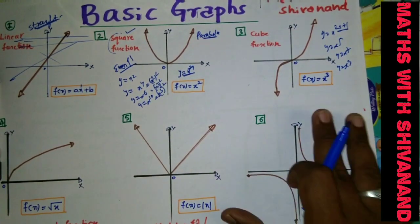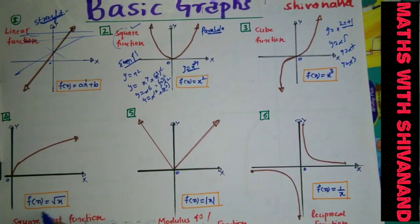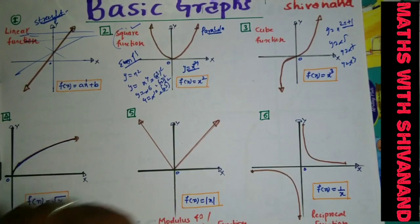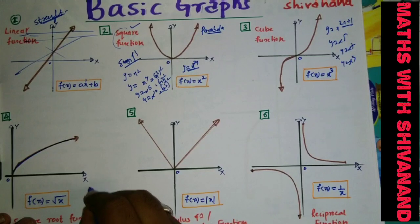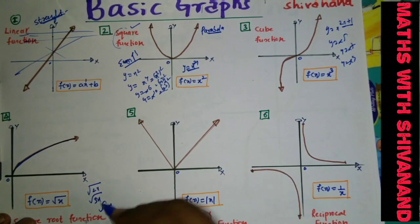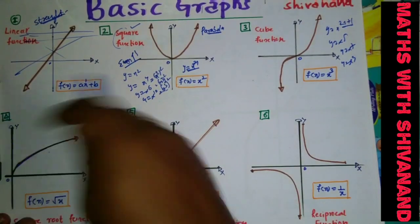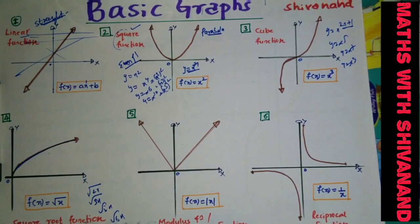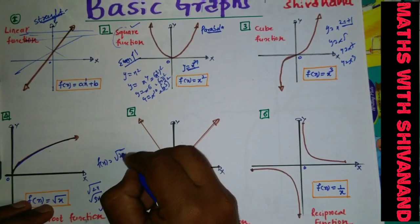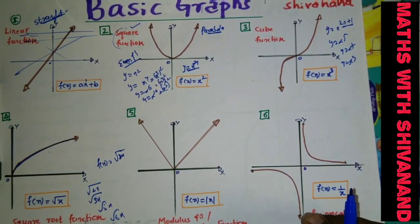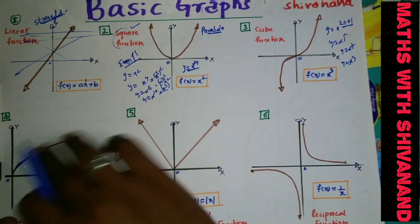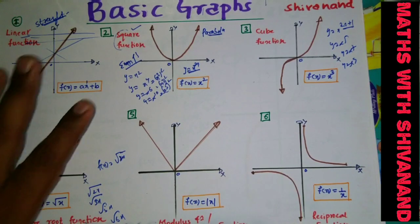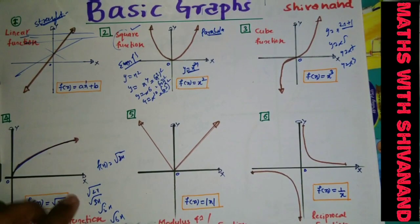Graph number four is the square root function. f(x) = √x — it looks like an exponential-like curve. Not only √x: if somebody asks you to draw √(2x), √(3x), √(5x), or √(6x), the shape is the same. All square root functions of the form √(kx) have the same basic shape. The graph is one-to-one, as it passes the horizontal line test, cutting only one point.